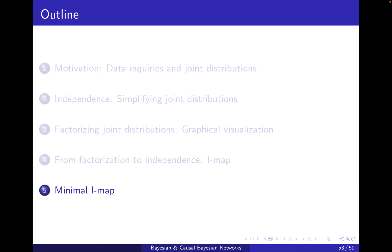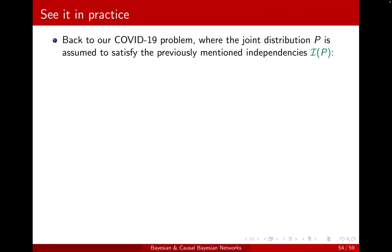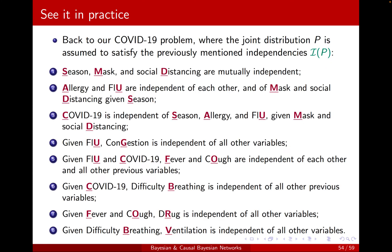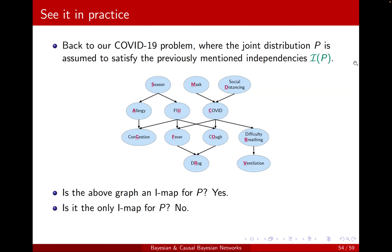Welcome to Section 5, Minimal IMAP. In the previous section, we saw that if you have a number of conditional independencies included in a distribution, and you're asked whether that distribution satisfies a particular factorization, then you can simply check whether the local conditional independencies in this graph are included in IP or not. For this close-to-real-world problem, the answer was yes, so this graph was an IMAP for P.